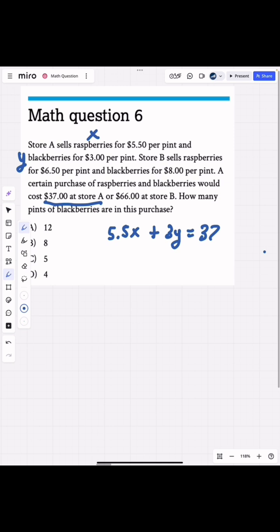Next we have store B, and they're going to be selling the same thing but for $6.50 a pint for raspberries and $8 a pint for blackberries. The total here is going to end up being about $66. So now we have two equations.